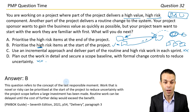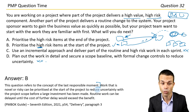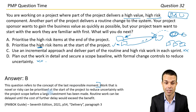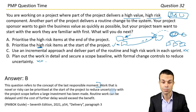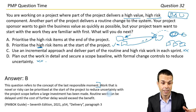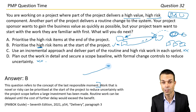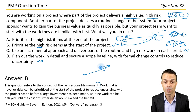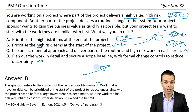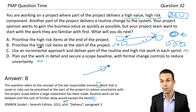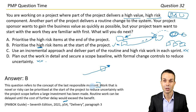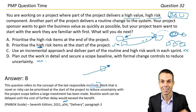This question refers to the concept of last responsible moment. Work that is novel or risky can be prioritised at the start of the project to reduce uncertainty before a large investment has been made. Routine work can be delayed until the cost of further delay would exceed the benefit — delay it as long as possible until it becomes too costly to delay further. Page 54 in the PMBOK Guide under delivery, paragraph three, 7th edition.